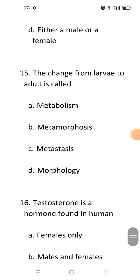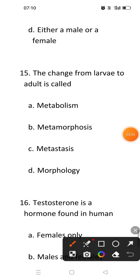Next question: The change from larva to adult is called. There is a stage in butterflies and frogs where a simple larva is converted into a completely different organism or changes into an adult. That change takes place in metamorphosis, so the answer of this question is B.